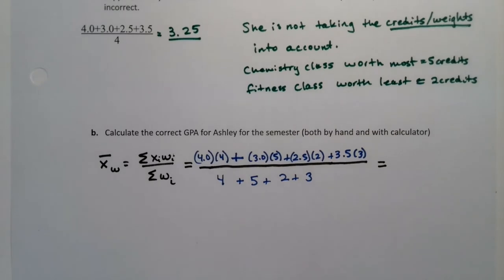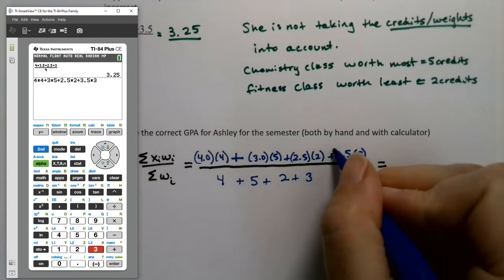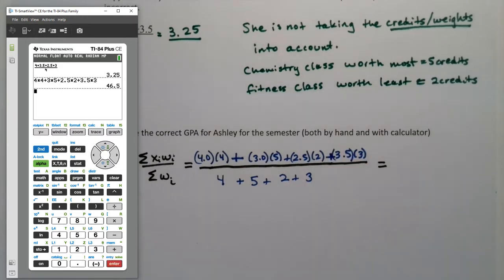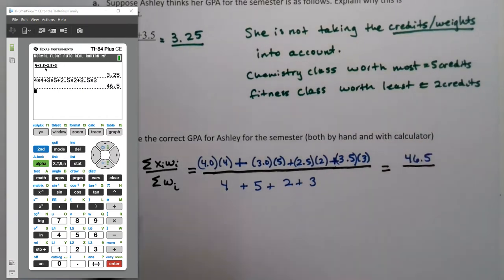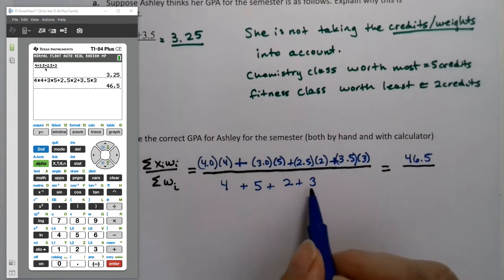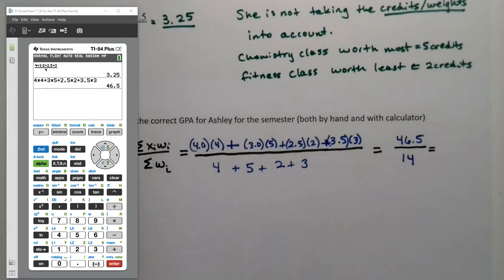Now when I say by hand, I'm not saying we won't do the calculation part with the calculator. So four times four plus three times five plus 2.5 times two plus 3.5 times three - I could use parentheses, I just chose not to. I get that the numerator is 46.5. Then we'll divide it by the denominator, which is four plus five plus two plus three - that's 14. She was enrolled in 14 credit hours that semester. Divide by 14: 3.321. That is her GPA.